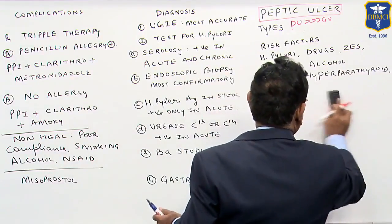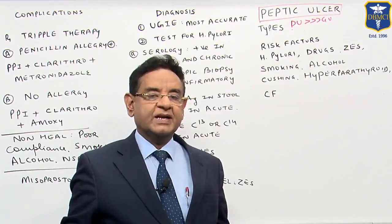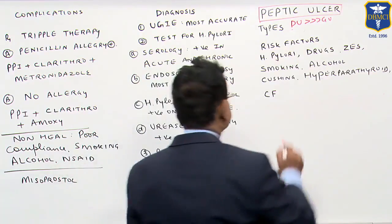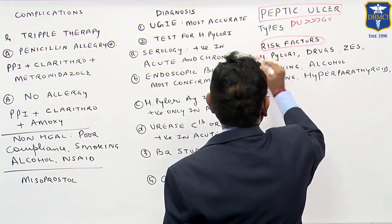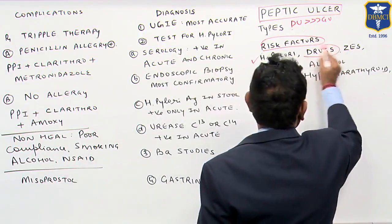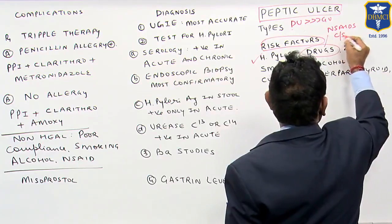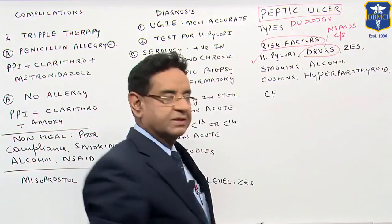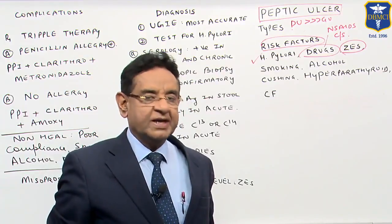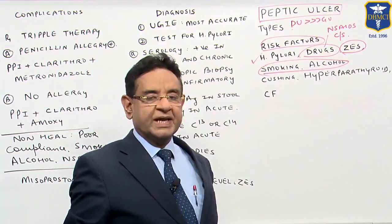Now, what are the risk factors for a case of peptic ulcer? There are risk factors which either can lead to peptic ulcer or which may hamper the healing. The risk factors are: H. pylori infection is one of the most common causes of peptic ulcer. Drugs like NSAIDs and corticosteroids. Zollinger-Ellison syndrome, because of high amount of gastrin which leads to high amount of acid. Smoking and alcohol — they are the ones which really hamper the healing of the ulceration.